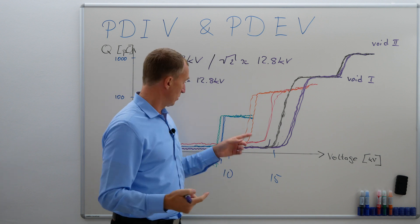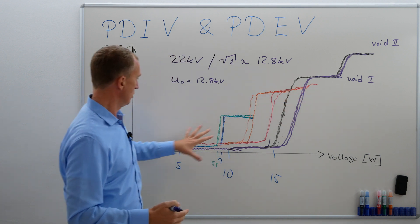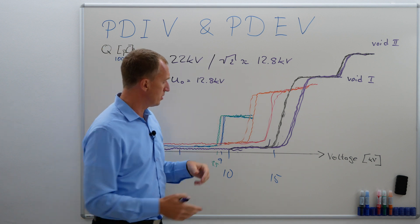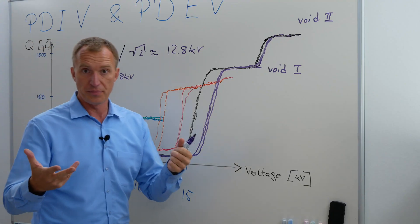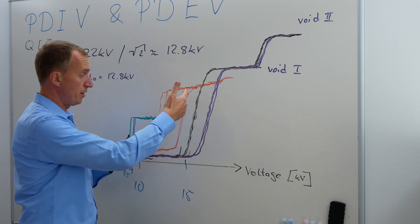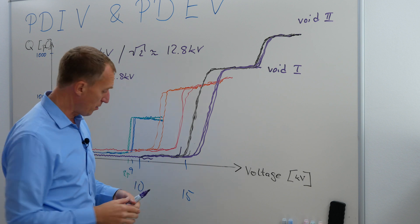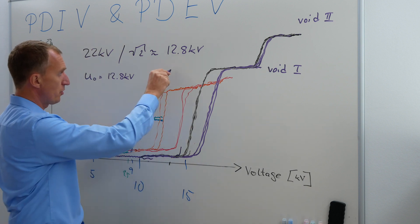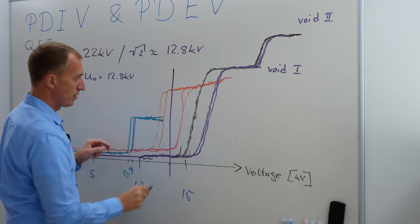So let's imagine we have this kind of service discharge here, right? We said that the red and the orange one would be a service discharge, could be for example in a cable. So this is the partial discharge inception voltage and this is the partial discharge extinction voltage. So now let's imagine 12.8 is probably around here.